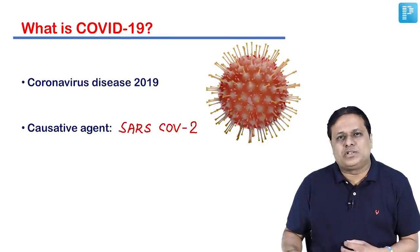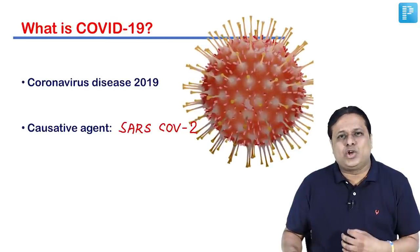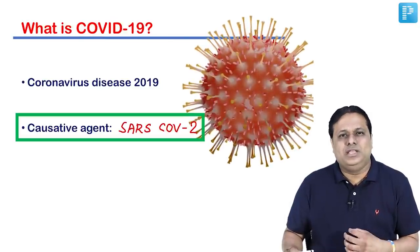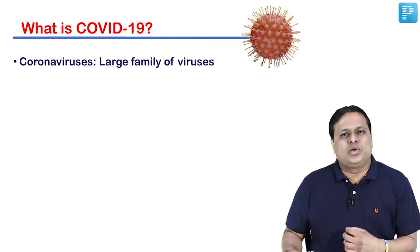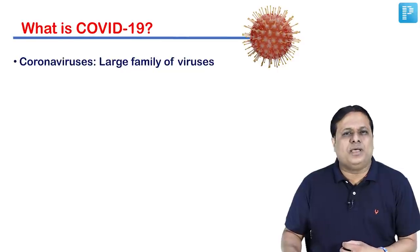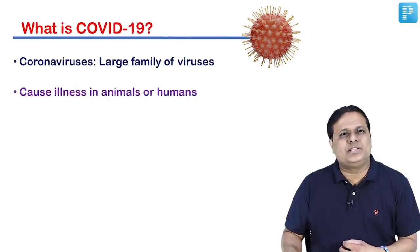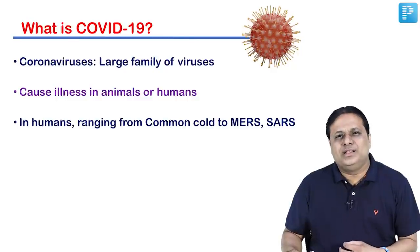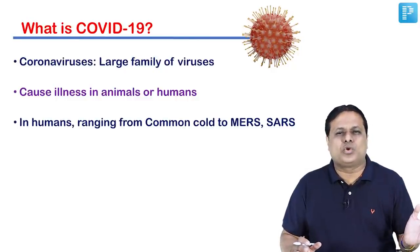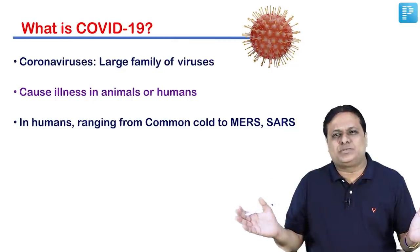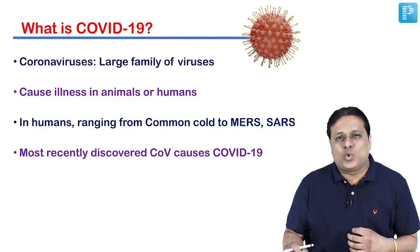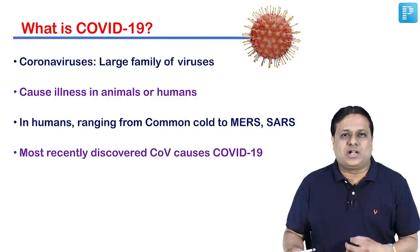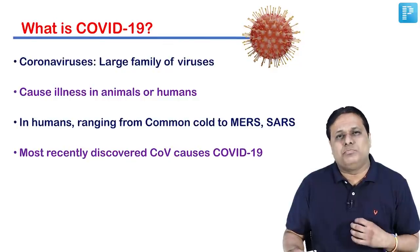The take-home point from this slide is the causative agent of COVID-19 disease. Coronavirus is a large family of viruses which causes illnesses in animals or humans. In humans, the spectrum ranges from a minor common cold on one hand to Middle East Respiratory Syndrome or SARS on the other. The latest pandemic, COVID-19, is due to this coronavirus, which is now raging across the planet in the form of its multiple waves.